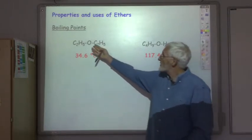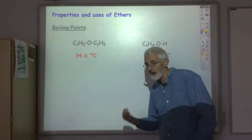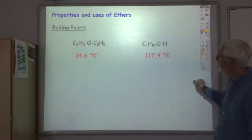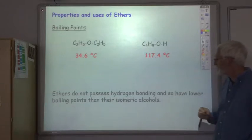Although we've got oxygen in the ether we do not have an OH group so we don't have hydrogen bonding in an ether. So ethers do not possess hydrogen bonding and so have a lower boiling point than their isomeric alcohols.